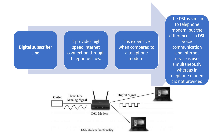This DSL modem is illustrated by a diagram where it is connected to the phone line. The DSL modem converts the analog signals from the phone line into digital signals so that the computers can get the internet connection.